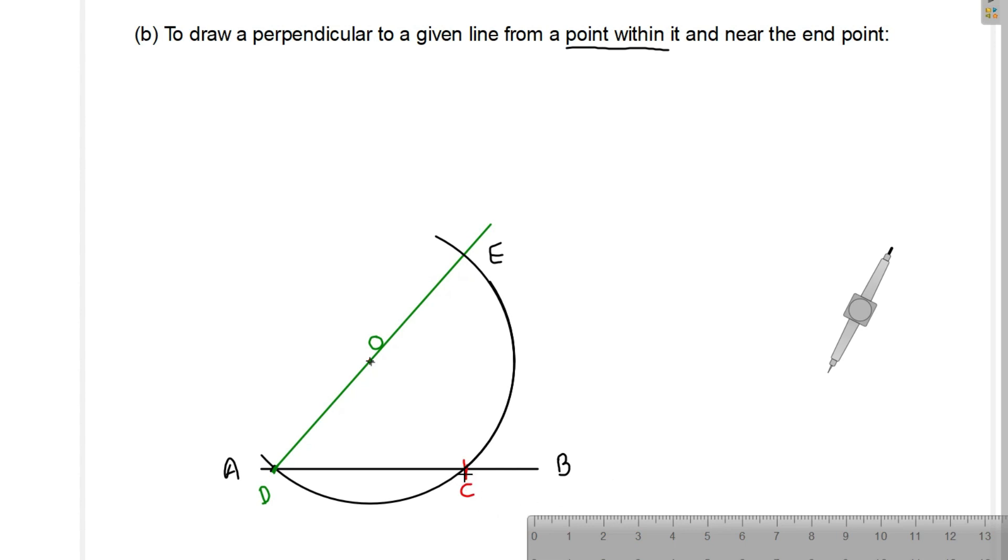Now when we join this C to E line, now we will join this line C to E. Now you can see the line C to E, this is a perpendicular line to a line AB.